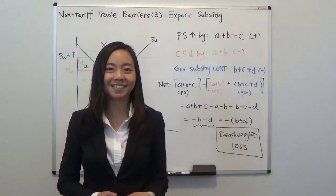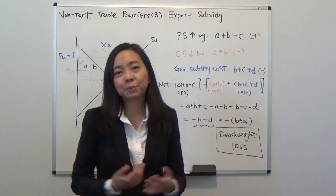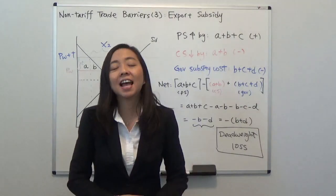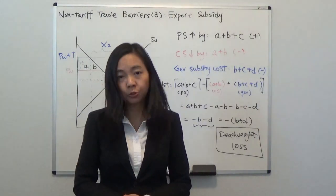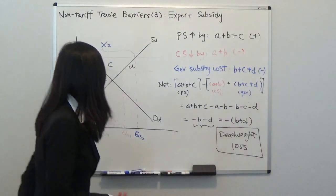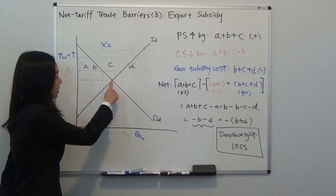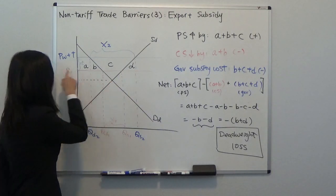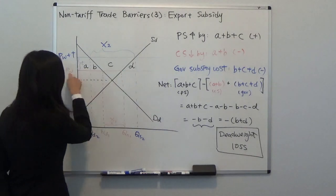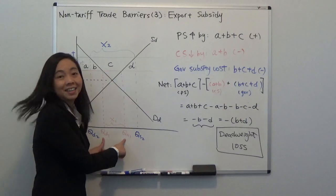Hello everyone, my name is Iris Franz and today we're going to talk about export subsidies. Suppose the government wants to encourage local producers to export, and they tell them: for each unit you export, I'm going to pay you a certain amount of money. Suppose the world price is PW and that's higher than our local equilibrium price. Given price PW, quantity supplied will be higher than quantity demanded, and the difference will be the export.